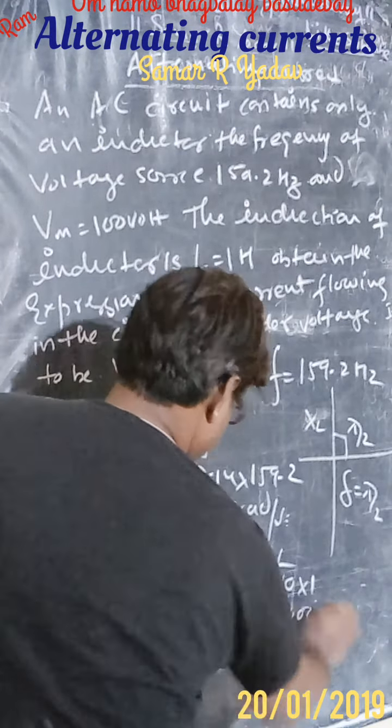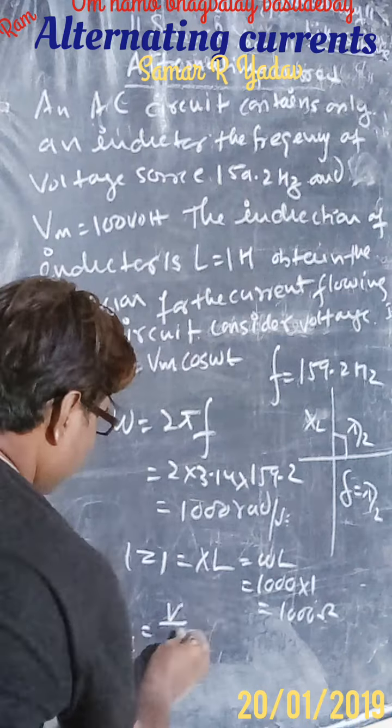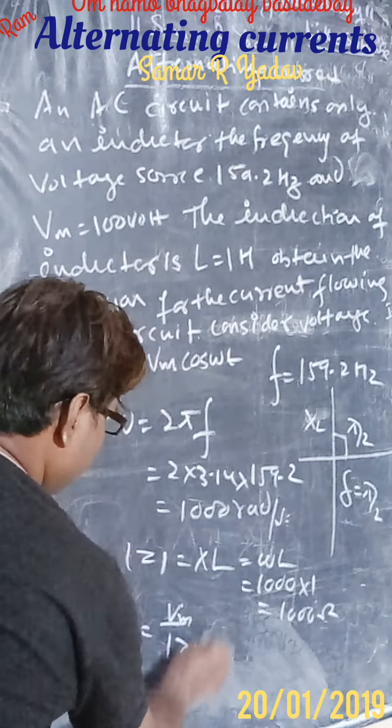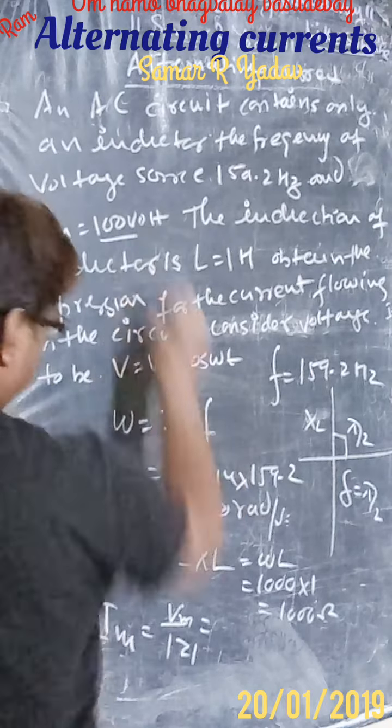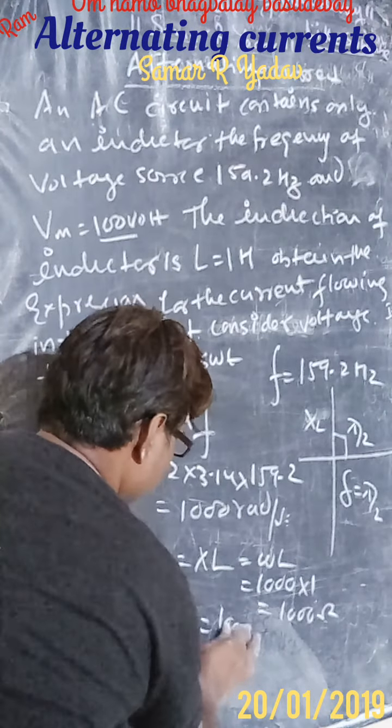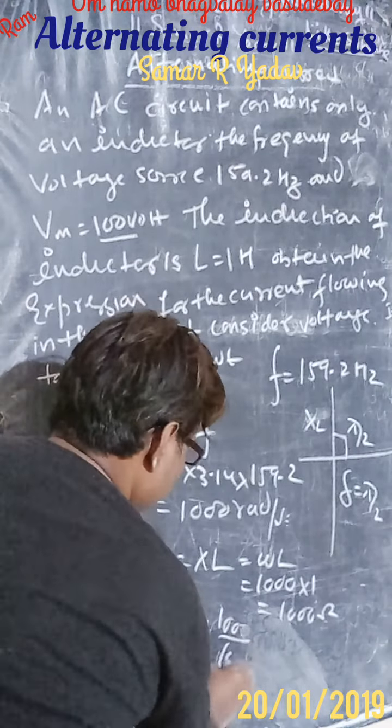Now we know that Im equals Vm upon mod z. So what is Vm here? Given Vm equals 100, so here 100 divided by 1000, so we get 0.1 Ampere.